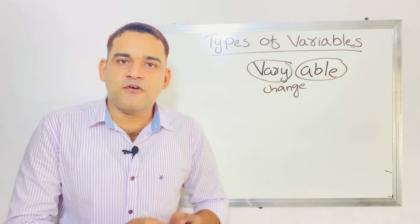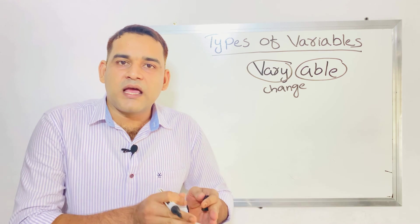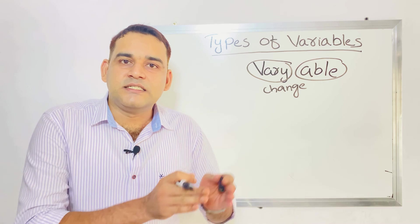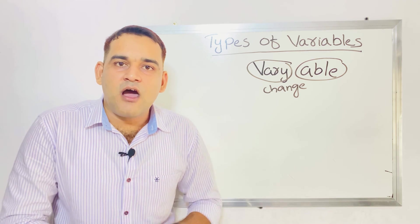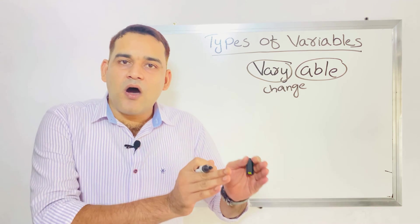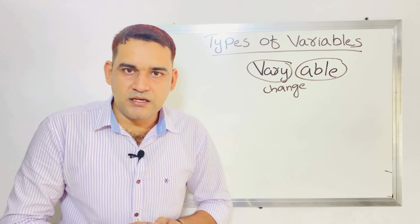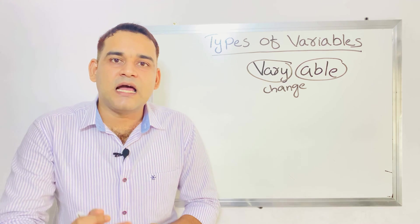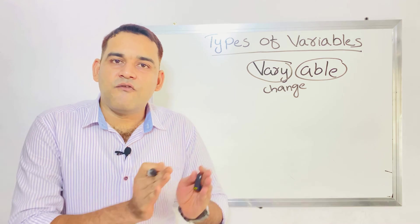Now we can see the definition of variables. Variables are qualities or characteristics of a person, thing, or situation that change or vary. So variables are the quality or characteristics of a person that can change. That is variable.